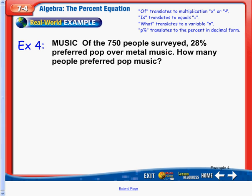Of the 750 people surveyed, 28% preferred pop over metal music. In this problem, we were looking for how many people preferred pop music. Now, right off the bat, we see of the 750 people. Of means multiply. And 750 looks to be our whole, right? Of all the people surveyed, 28% preferred pop over metal music.